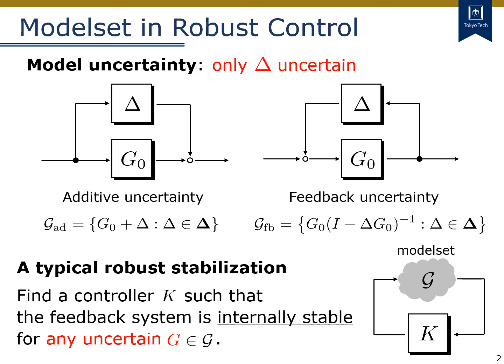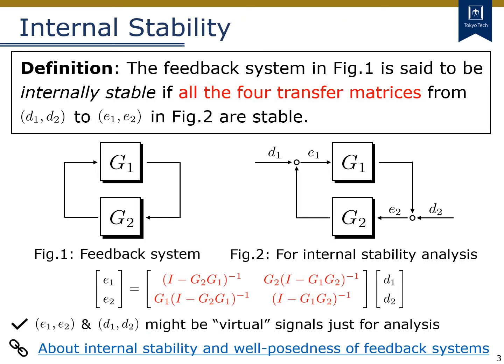The key point here is that we consider the stabilization of all the plant models using the fixed controller K, which is to be designed. To make the discussion clear, I explain the definition of internal stability, which is defined for the feedback system like this. To define internal stability, we consider some additional signals denoted by D1, D2, E1, and E2. Please note that these signals are generally virtual signals, which may appear only in the definition of internal stability.